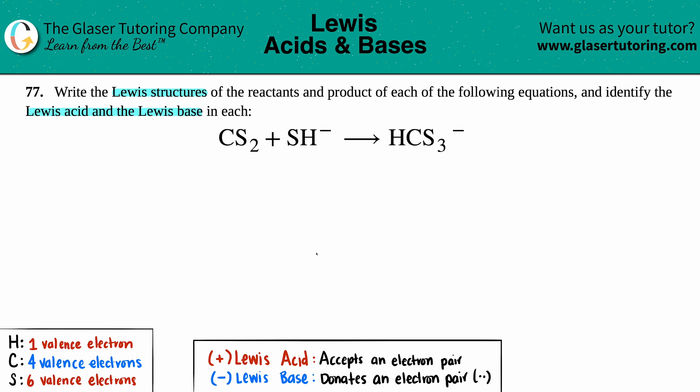Okay, so let's go. CS2, least electronegative in the middle. Seems like carbon is going to be in the middle surrounded by the two sulfurs. So I have C, maybe I'll do an S and an S. Carbon has four valence electrons, so I'll say one, two, three, four, and each sulfur has six valence electrons. So I'll say one, two, three, four, five, six, one, two, three, four, five, six.